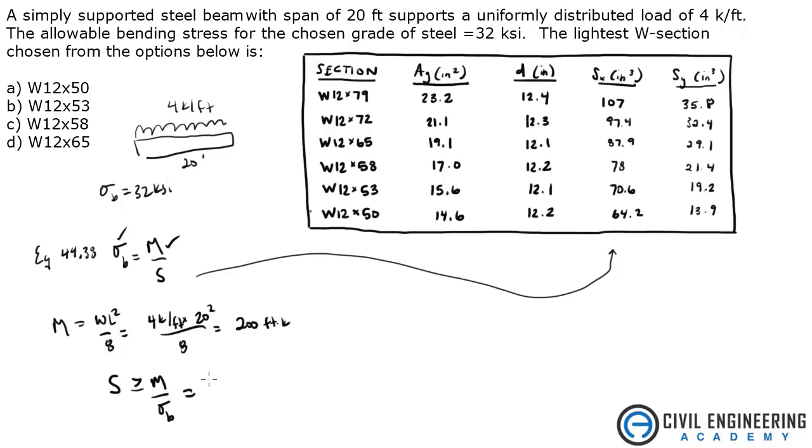We just got M of 200 foot kips divided by 32 KSI. If we're looking for inches, we need to multiply this by 12 inches and 1 foot to get the units right. And what does that give me? That gives me 75 inches cubed.